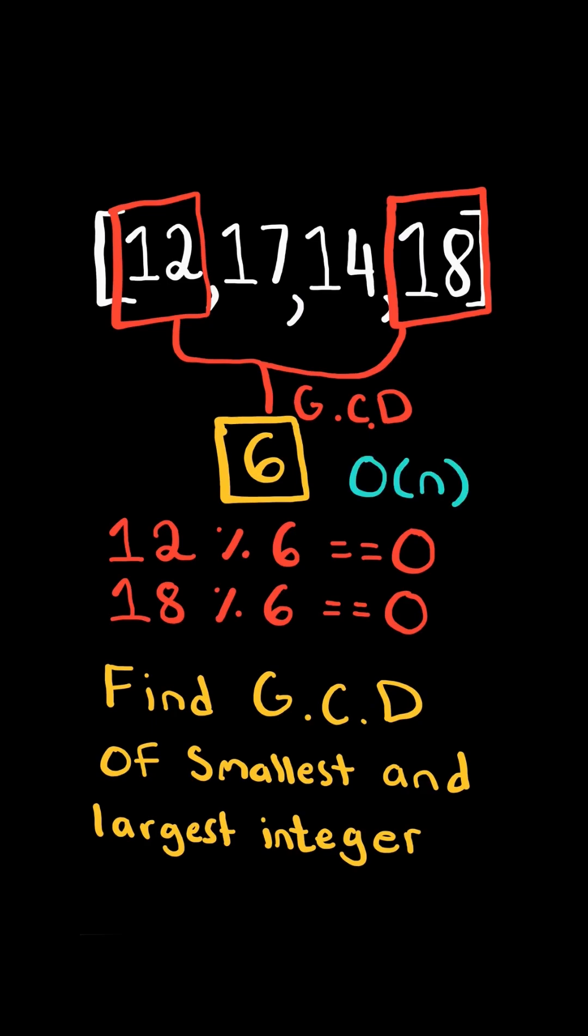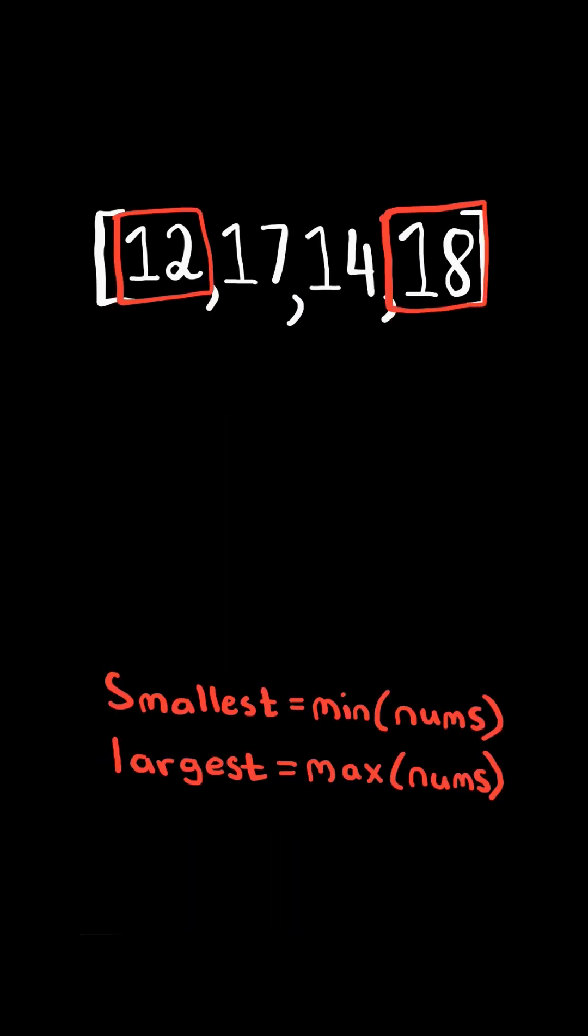We will solve this in O(n) time. First, we will find the smallest and largest numbers. Finally, we will return the greatest common divisor of the smallest and largest.